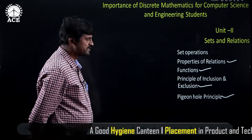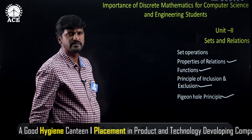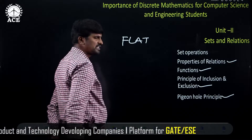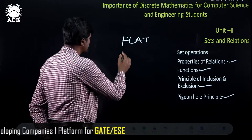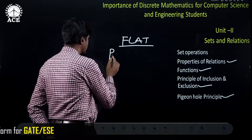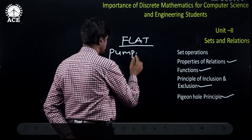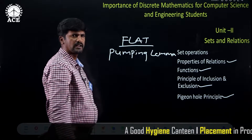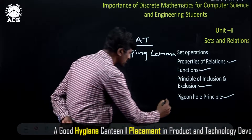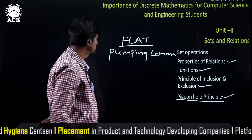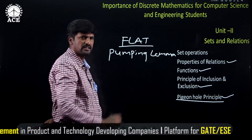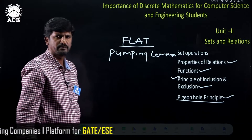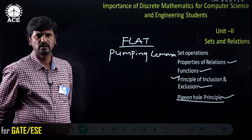They are also going to study about the pigeonhole principle. The pigeonhole principle is very important because in the subject formal languages and automata theory, also called theory of computation, there is an important lemma called pumping lemma. To prove the pumping lemma, one must have knowledge about the pigeonhole principle — the pumping lemma is proved using the pigeonhole principle. The principle of inclusion and exclusion is used for counting numbers.